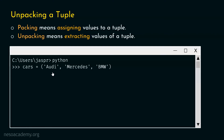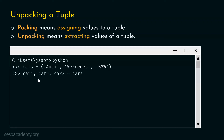Now let's unpack this tuple. Since there are three values, we need three variables — car1, car2, and car3 — each receiving one item in sequence. The first variable gets Audi, the second gets Mercedes, and the third gets BMW. Let's type: car1, car2, car3 = cars. This assignment expression allows us to unpack the tuple.